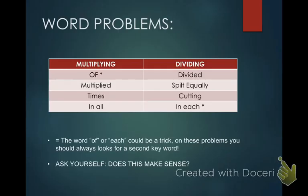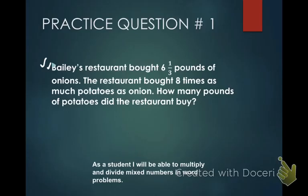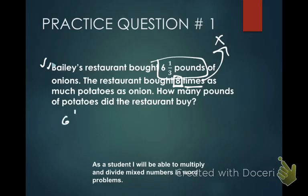We're going to start with the first one. It says: Bailey's Restaurant bought six and one-third pounds of onions. The restaurant bought eight times as much potatoes as onion. How many pounds of potatoes did the restaurant buy? When I do word problems, I like to read the question three times. I write down a check mark that I read it once, then I read it again. This time I might even underline keywords. The restaurant bought eight times — eight is a number, and times means multiply. So we're going to multiply six and one-third by eight.